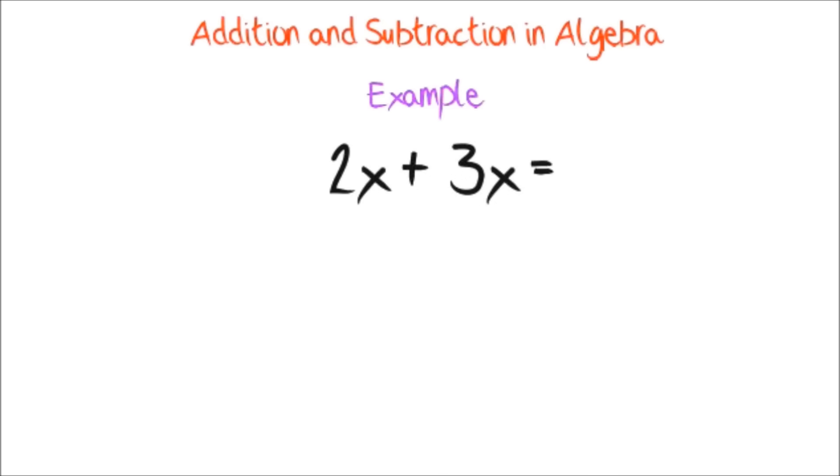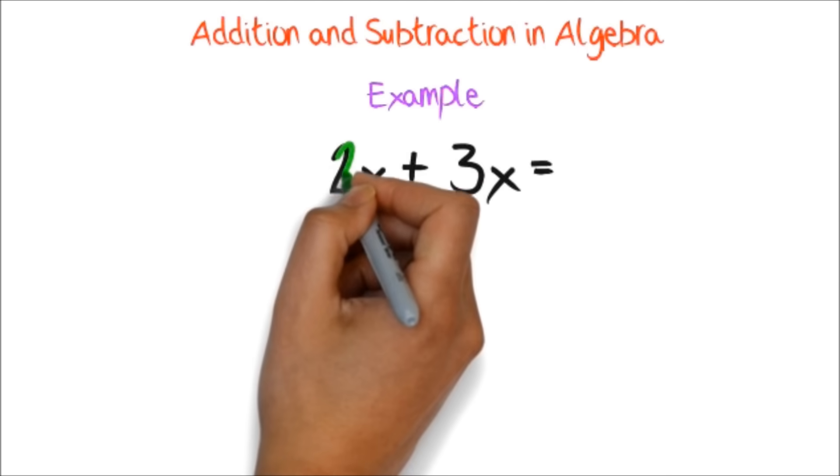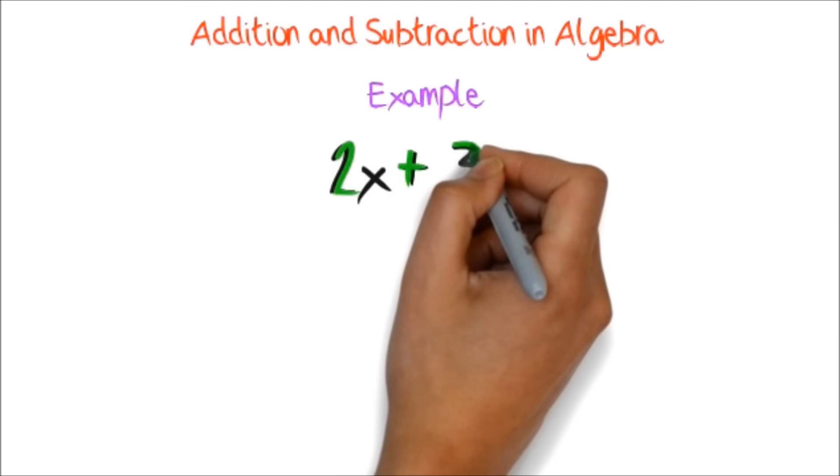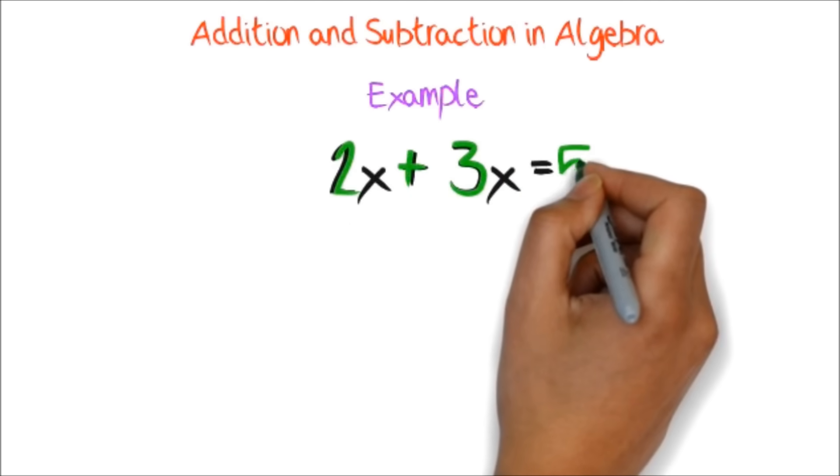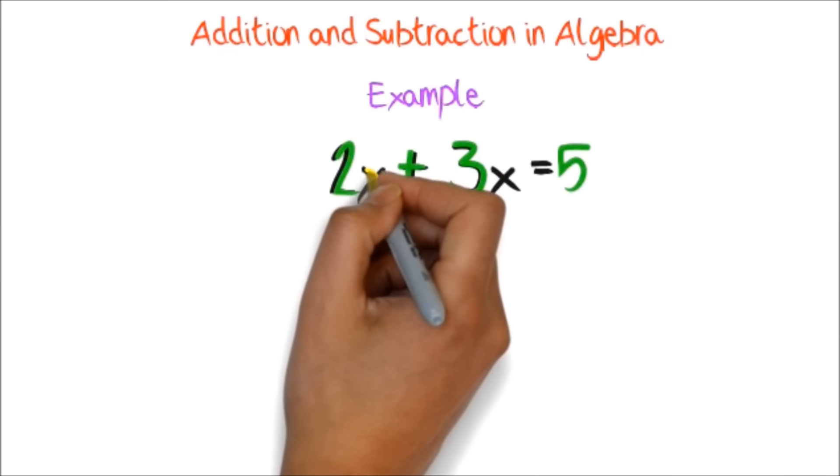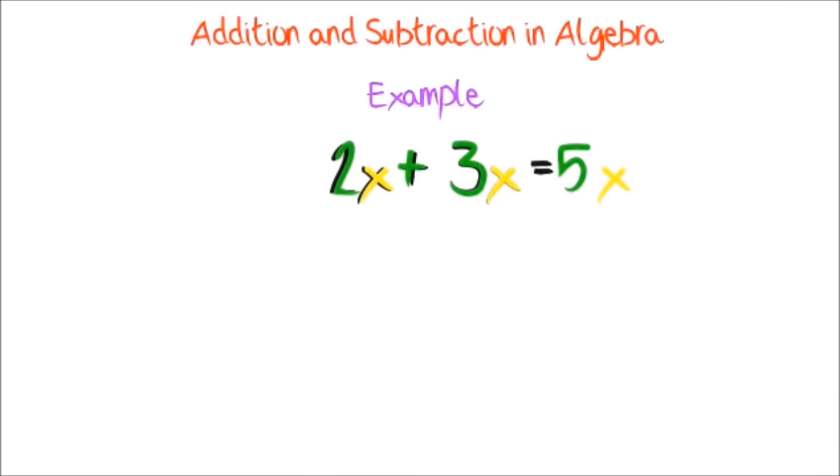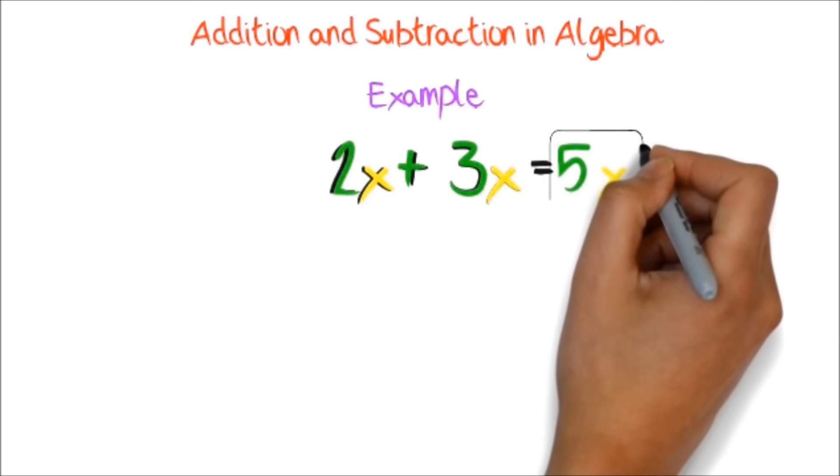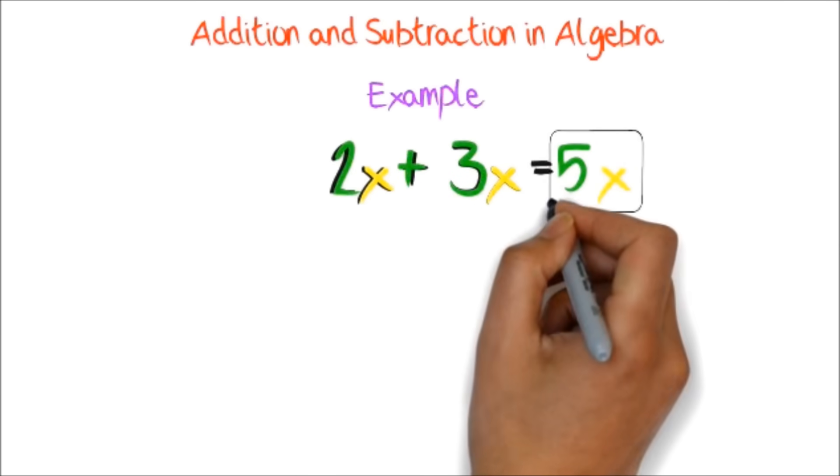All you do is add the numbers and bring the common letter after the number. So we added the 2 and the 3 to get 5. Then, we brought the x after it. The final answer is therefore 5x.